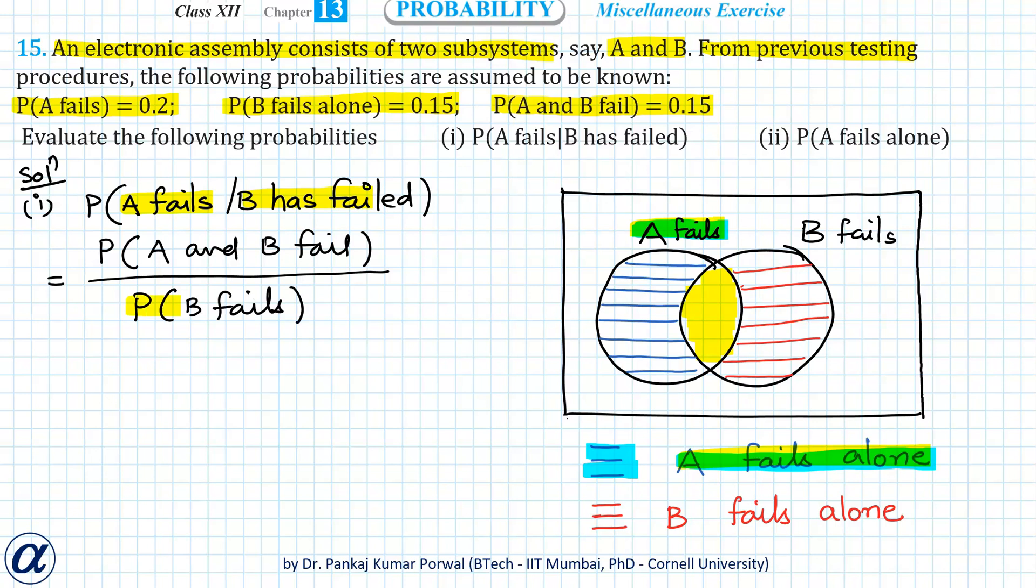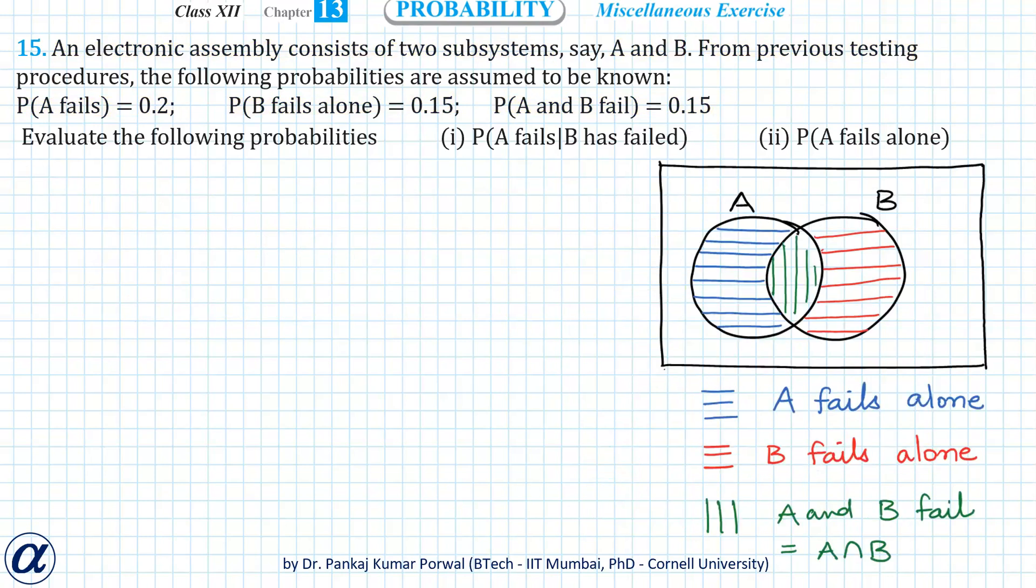Now the probability of event B fails is not given explicitly, so we will have to calculate that using given probabilities. To do that, I can write event B fails as union of event B fails alone and event A and B fail. From that, probability of B fails will be probability of the union of this and this, and from the Venn diagram we can clearly see